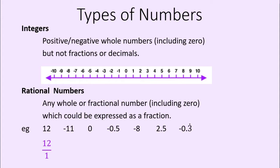Negative 11 we could write as a fraction as well — as negative 11 over 1. Or, negative 22 divided by 2 would also give me negative 11, so that could also be written as a fraction. Zero — how could zero be written as a fraction? Well, zero could be divided by any number and the value would still be zero.